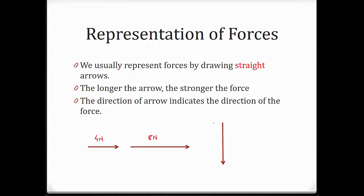The direction of the arrow indicates which direction the force is actually acting. So this is a force that is pulling the object down, or this is a force at an angle — maybe 35 degrees based on the horizontal. Remember, the length of the arrow indicates how strong the force is.